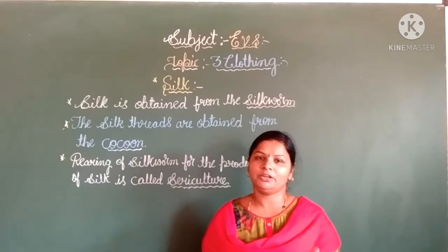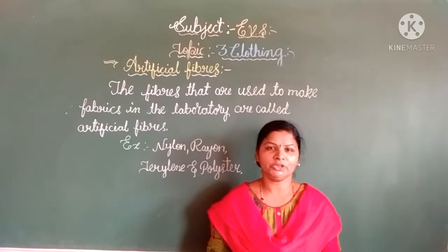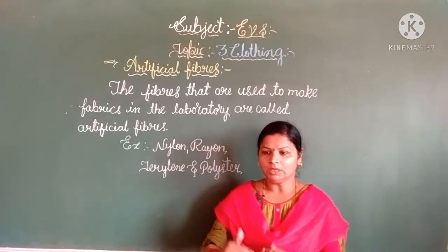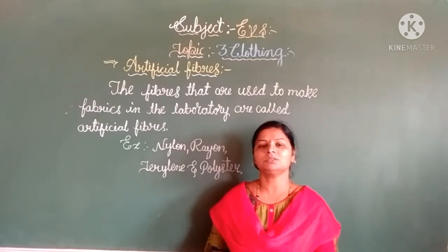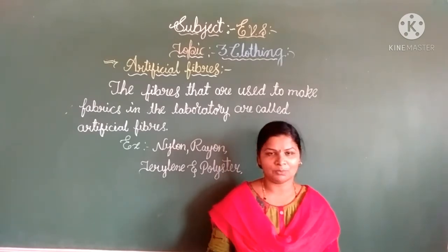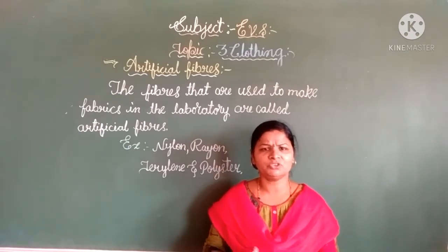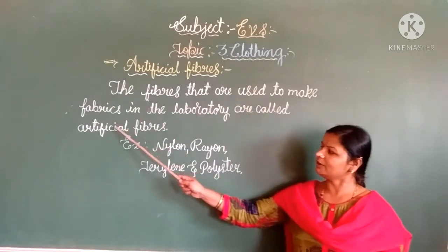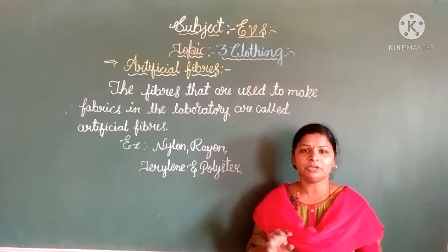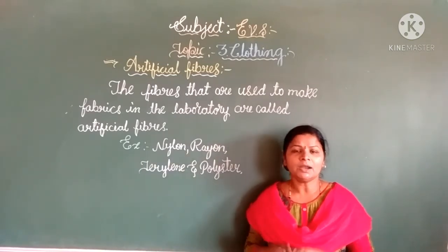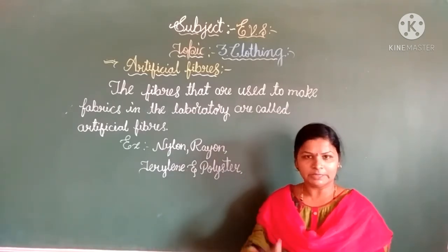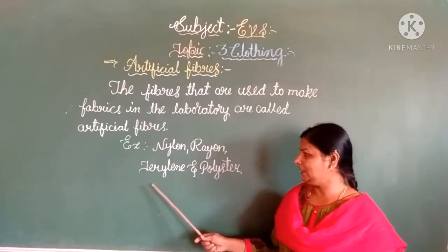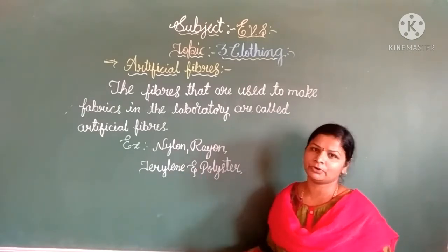Now we are going to discuss about artificial fibers, which are made by man. We previously discussed natural fibers obtained from plants and animals. Now, what is meant by artificial fibers? The fibers that are used to make fabrics in the laboratory are called artificial fibers. These fibers are discovered in the laboratory using different types of chemicals, making different threads like nylon, rayon, terrylene, and polyester — these are examples of artificial fibers.